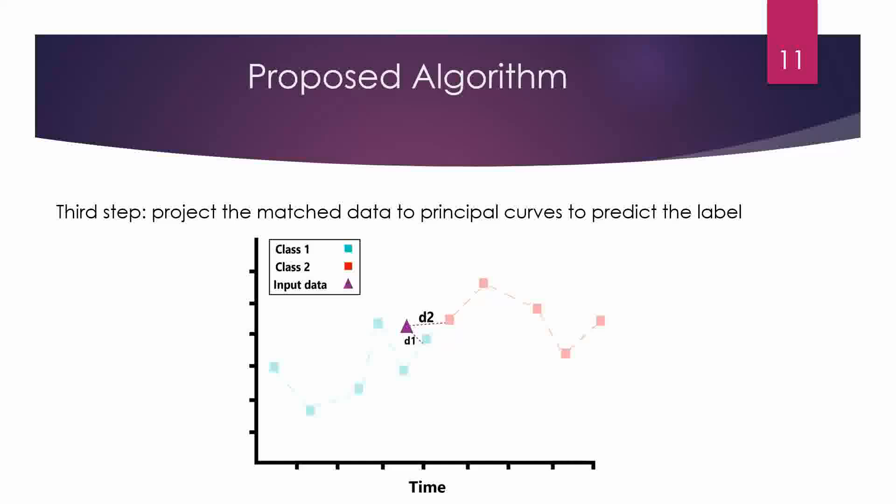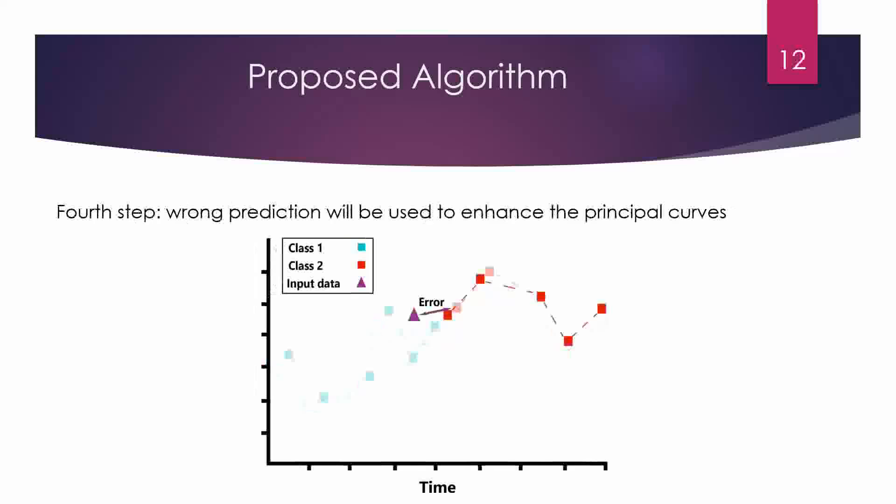After finding the most similar state, we predict the label. For that purpose, we project the last input data point on all the principal curves, each representing one class of data. After projection, the closest principal curve to the data point determines the label. In the last step, we enhance our principal curve from the wrongly predicted data points — each wrongly predicted data point should be closer to its corresponding principal curve.